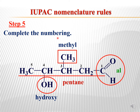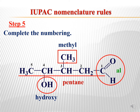Step 5 is to complete the numbering. Once we have selected the longest chain and determined the suffix and prefix groups, we number the compound so that the principal group gets the lowest possible number. The aldehyde is present on the terminal carbon, so we count that as carbon 1 and start numbering from the aldehyde side: one, two, three, four, and five. The methyl group is at the third position and the hydroxy group is at the fourth position. So the aldehyde gets number 1, methyl gets position 3, and hydroxy gets position 4.